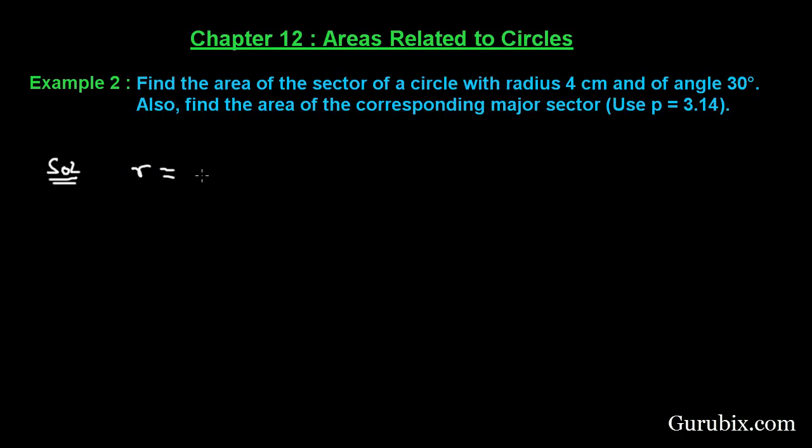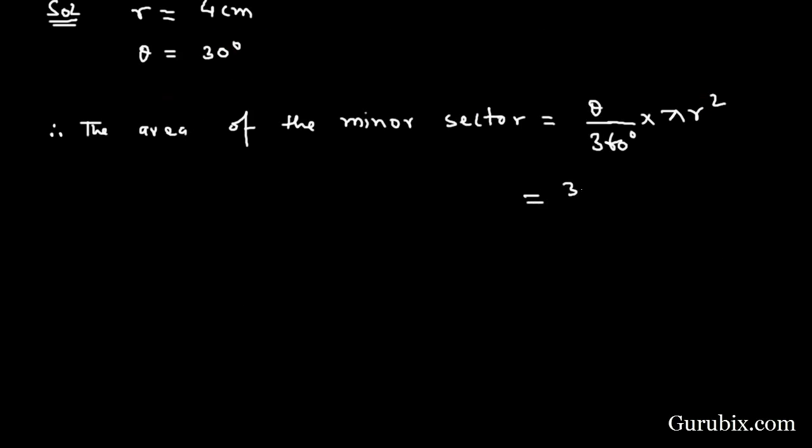The radius of the circle is given as 4 centimeters, theta is given as 30 degrees. Therefore, the area of the minor sector equals theta over 360 degrees times pi r squared. So theta is given as 30 degrees over 360 degrees times 3.14, r is given as 4 centimeters, then it will be 4 times 4 centimeter squared.